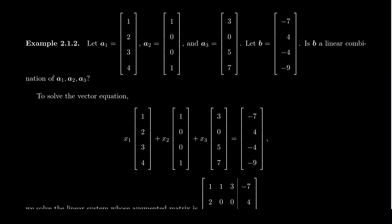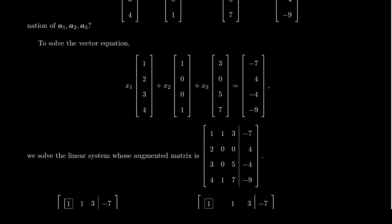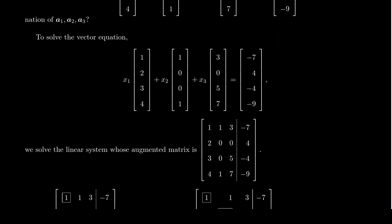Now, if b were a combination of these vectors, then there would be some scalars x1, x2, x3, which would multiply by a1, a2, a3 respectively and add together, this would add up to be the vector b. Therefore, determining whether b is a linear combination of the a's or not, is equivalent to solving this vector equation.